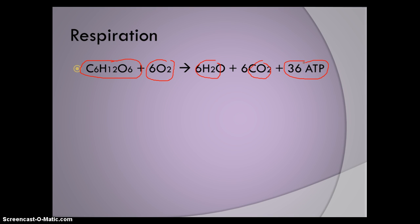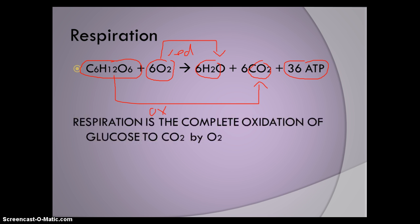It releases the energy in slower steps and stores it in ATP. ATP is the energy source in the cell. In this reaction, we're basically taking glucose and oxidizing it into carbon dioxide. Then we're taking oxygen and reducing it to water. So in this reaction, glucose is oxidized and oxygen is reduced to water. Respiration is the complete oxidation of glucose to carbon dioxide by oxygen. Oxygen is the oxidizing agent helping to oxidize glucose.